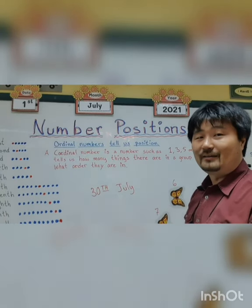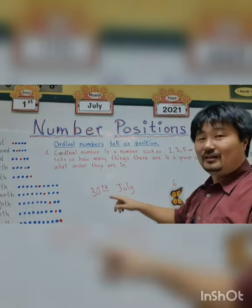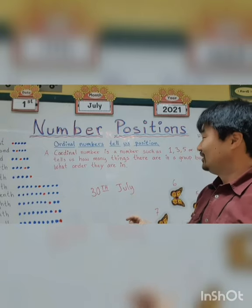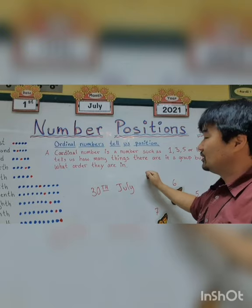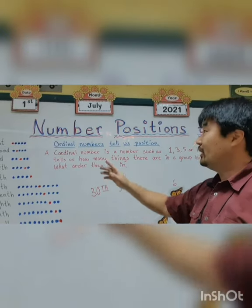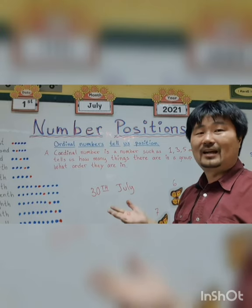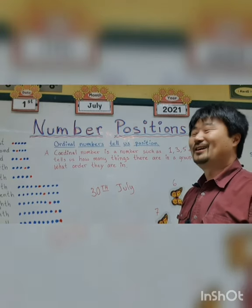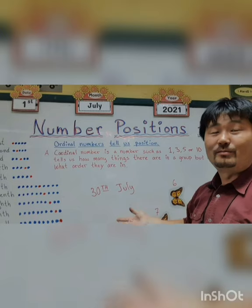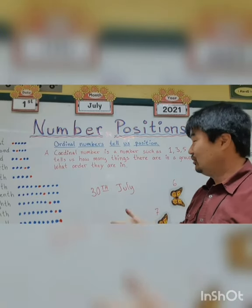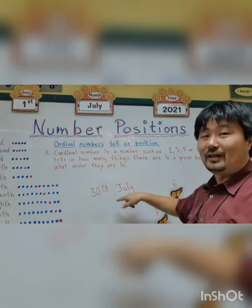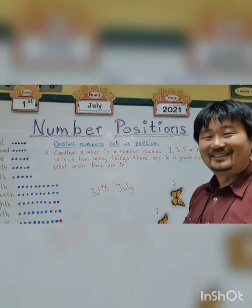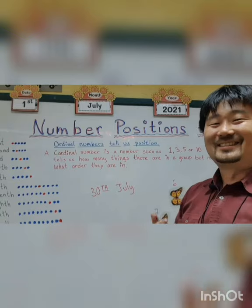I will explain the 'th' a little bit later in this video. Ordinal numbers tell us in what position. Every day of every month they are ordinal numbers, because they tell us what position that day has in every month. Today is day 30 of July, so that has the position 30th. I apologize — I was stumbling over my words. But do you understand?